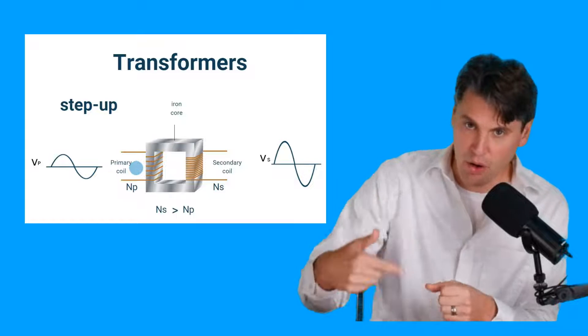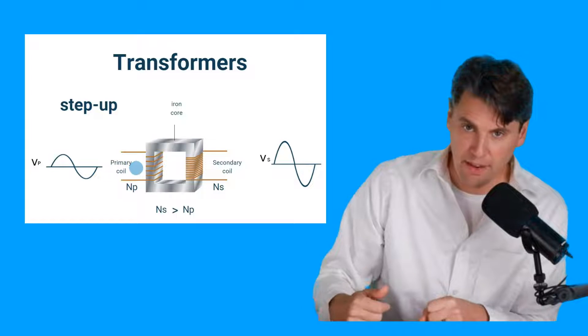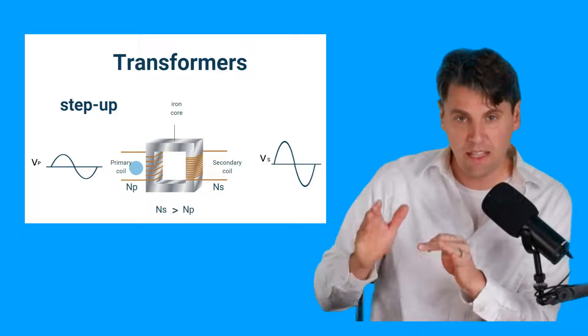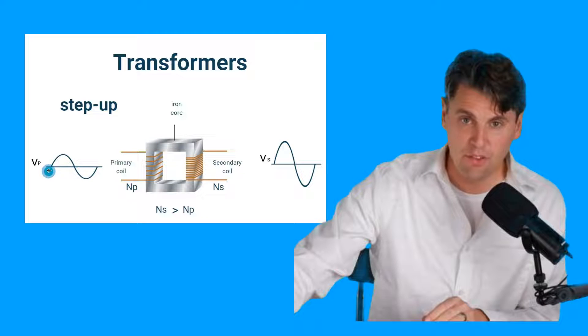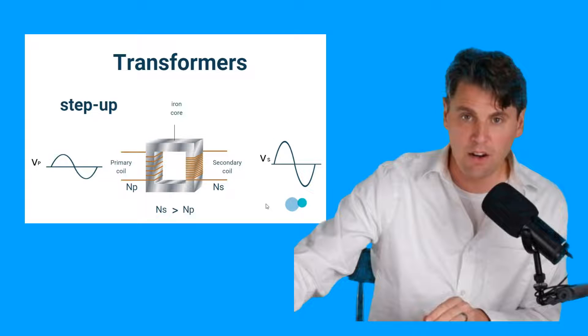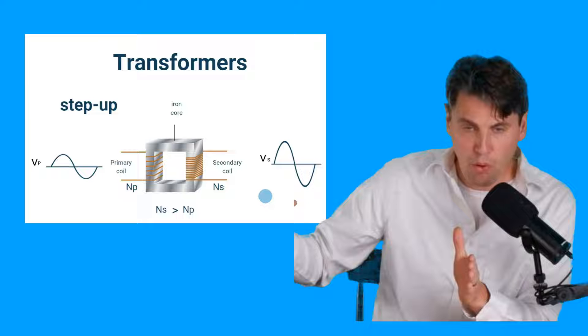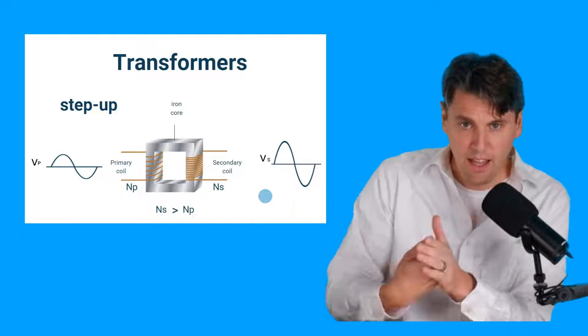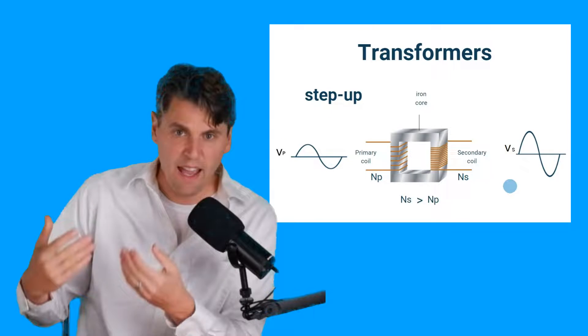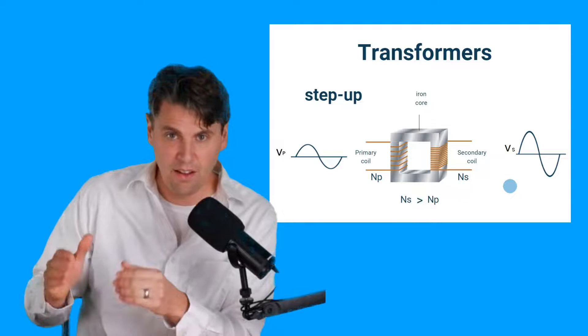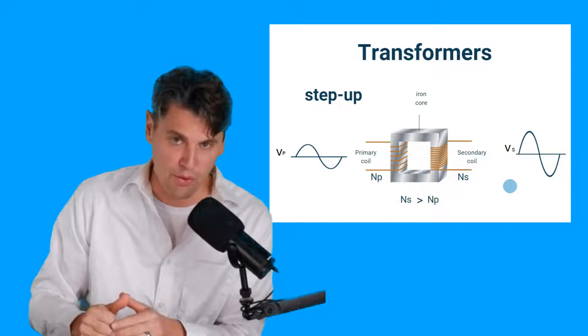By changing the ratio, the number of coils we have on each side, we can actually change what the signal is going to look like in terms of the voltage and in terms of the current. What we care a lot about on our x-ray circuit is we want to be able to pull electrons across, hit them hard into a heavy metal, and we need tens of thousands of volts in order to do that.